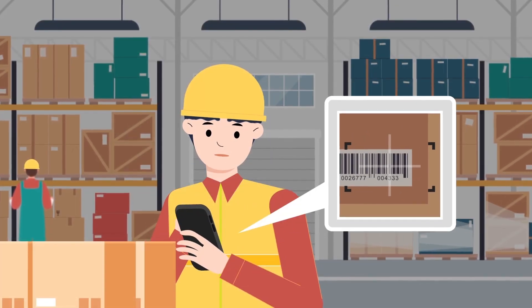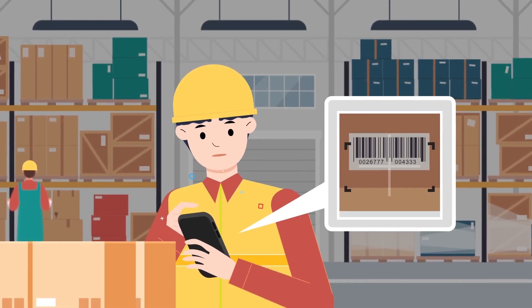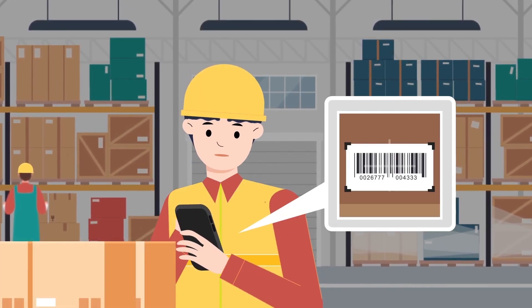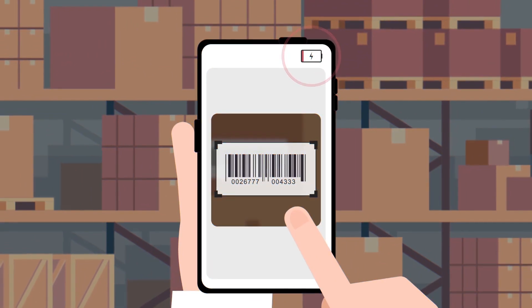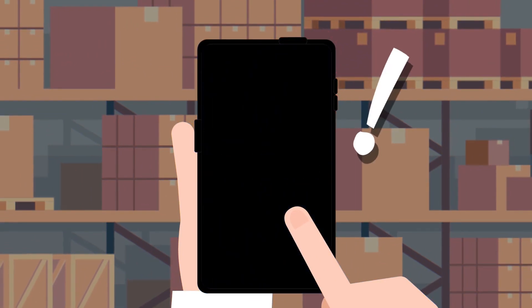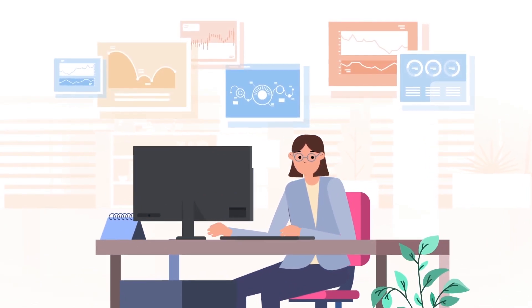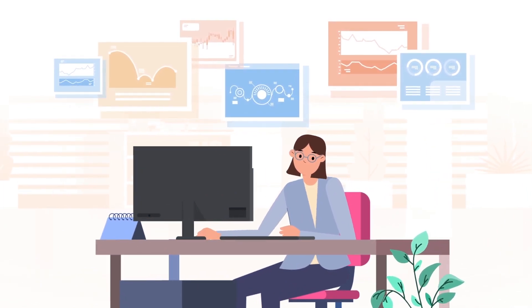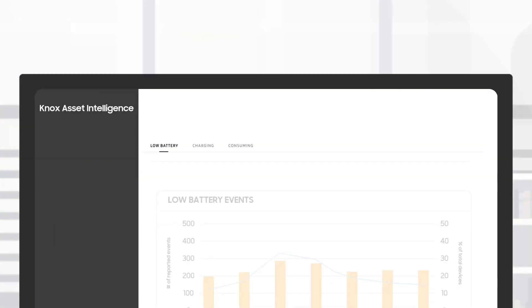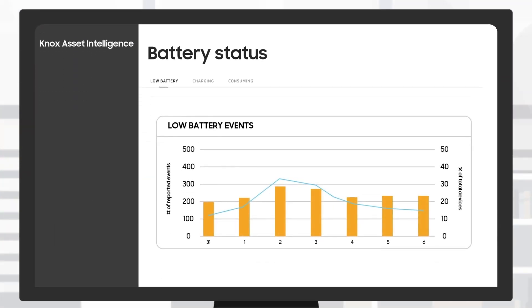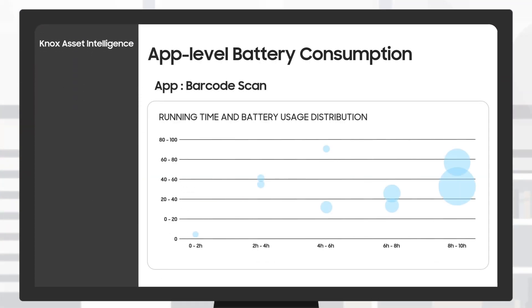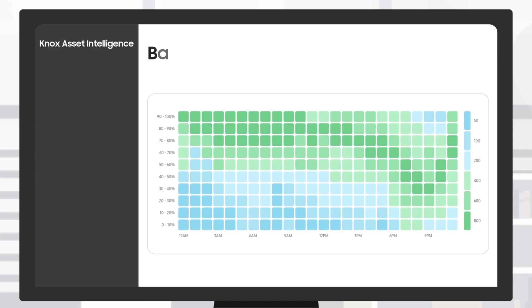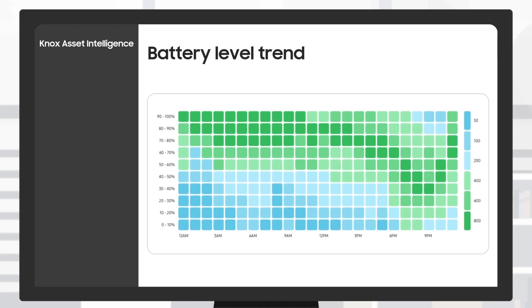For frontline workers, the batteries of their devices are like a lifeline. If the batteries run out, their work is likely to be suspended. That's why Knox Asset Intelligence provides powerful insights into battery usage, such as low battery status, battery consumption of each app, and battery level trends over time.